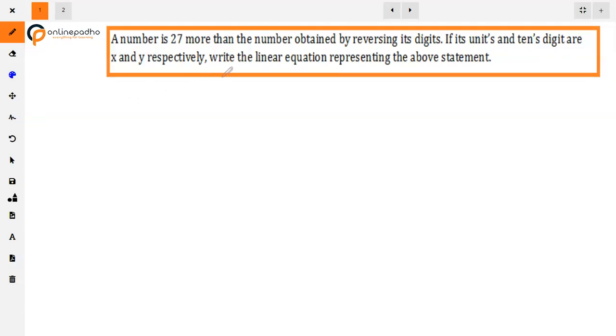The question is: a number is 27 more than the number obtained by reversing its digits. If its units and tens digit are x and y respectively, then write the linear equation representing the above statement.